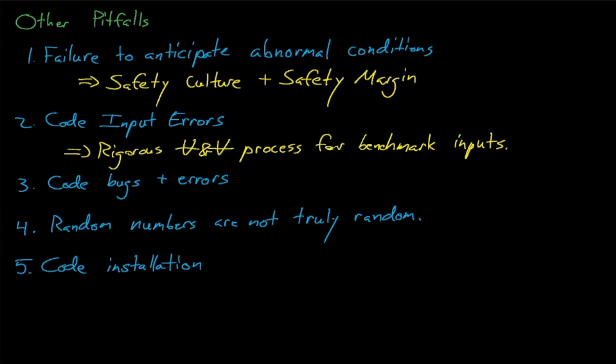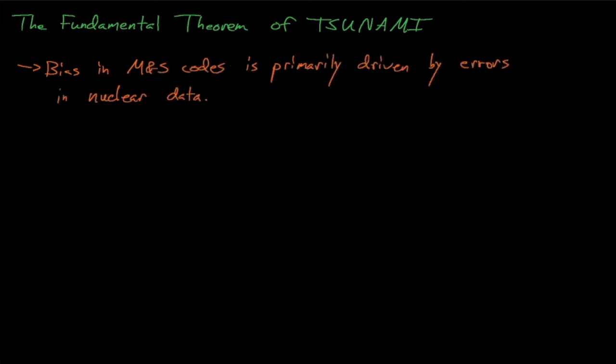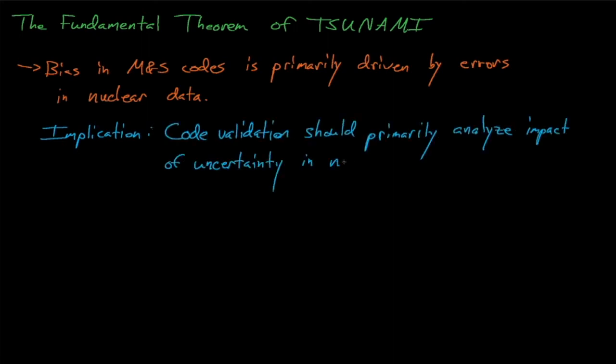So assuming that we have avoided these other pitfalls, it seems that uncertainty in nuclear data is the most likely reason why a Monte Carlo code could produce incorrect results. The fundamental theorem of Tsunami, which is a sensitivity and uncertainty analysis code from Oak Ridge National Lab, asserts just this, that bias in high-fidelity modeling and simulation codes is primarily driven by errors in the nuclear data. A consequence of this theorem is that any validation efforts which aim to understand the computational bias in Monte Carlo simulations should focus on understanding the impact of nuclear data uncertainty on the Monte Carlo simulation results.